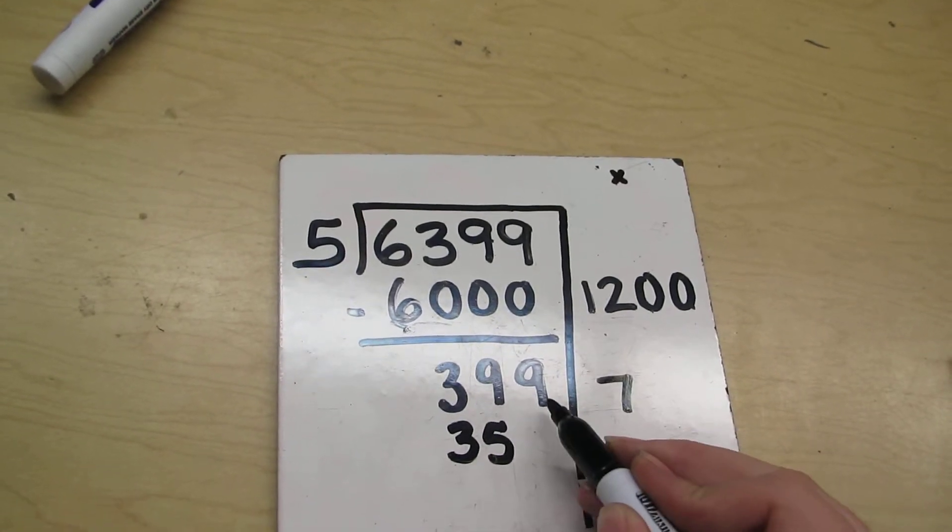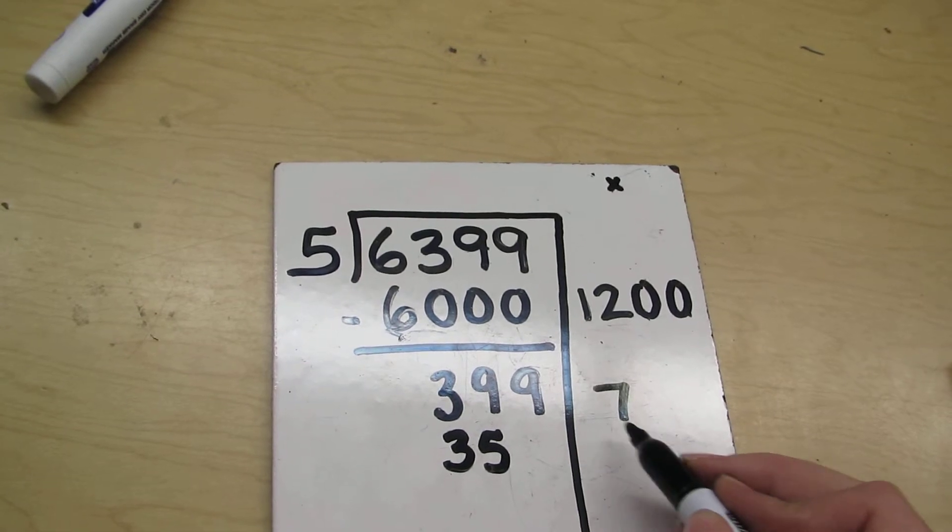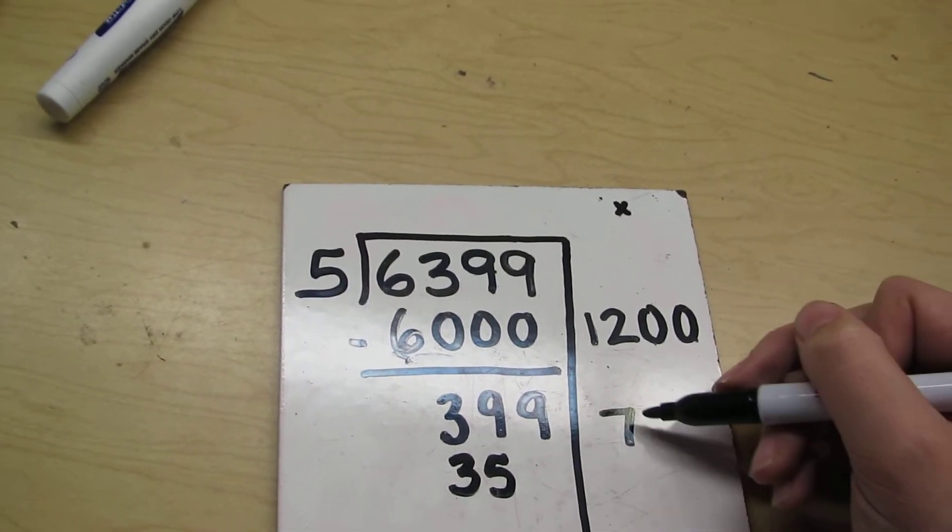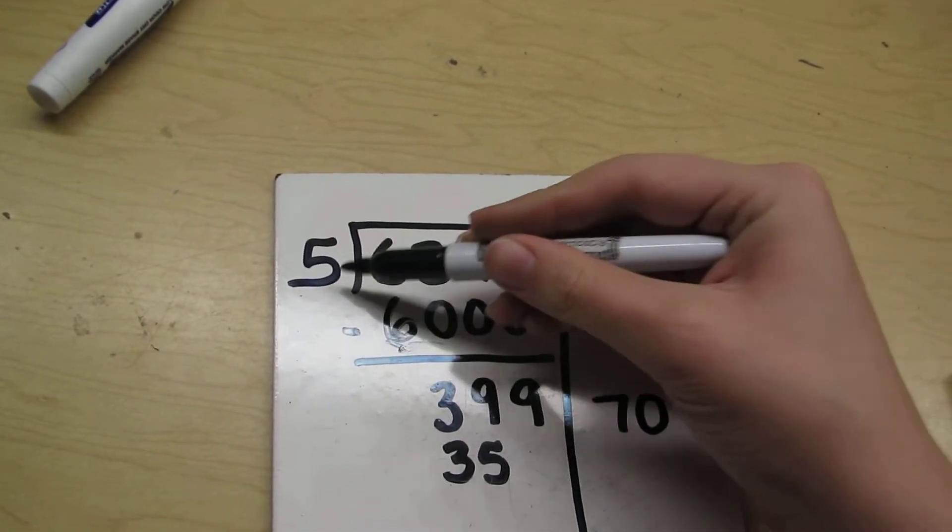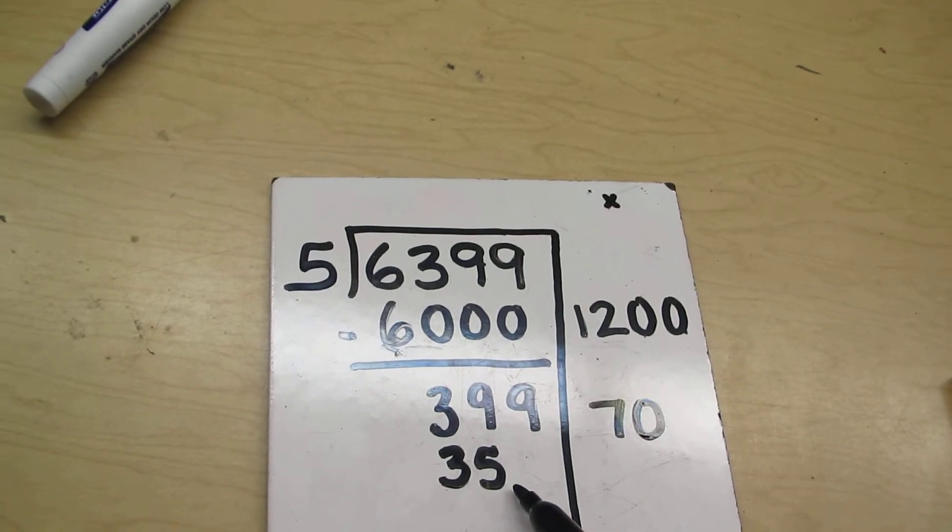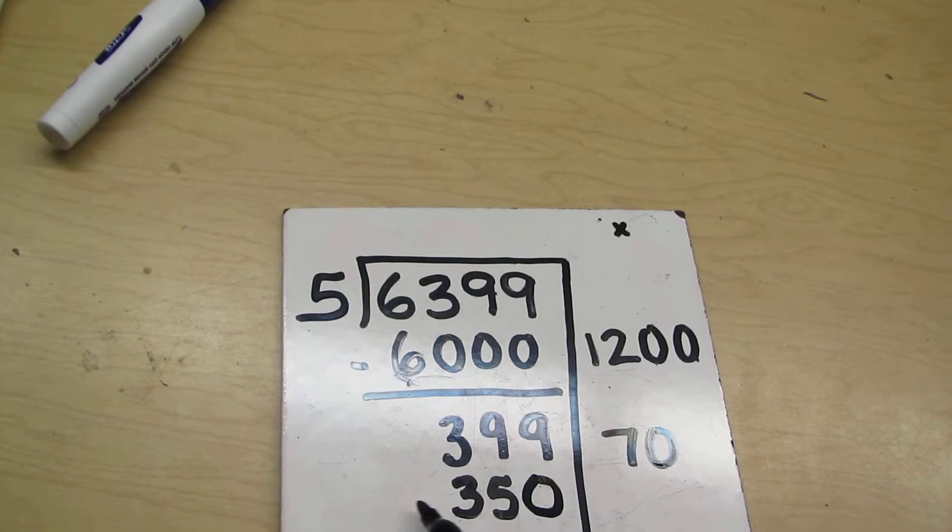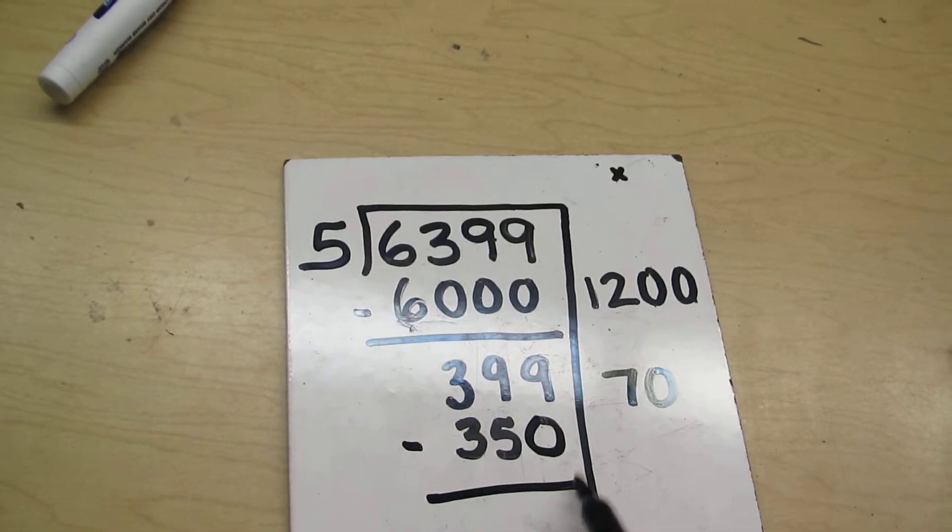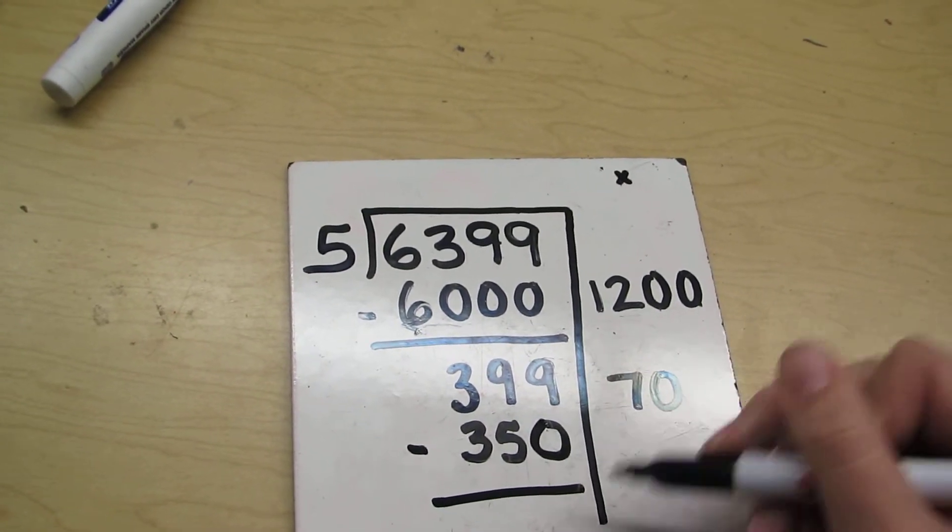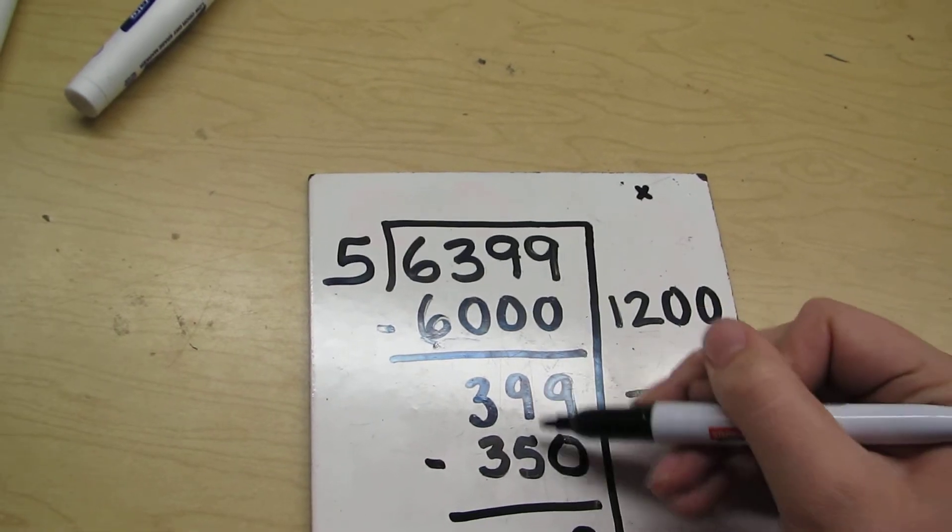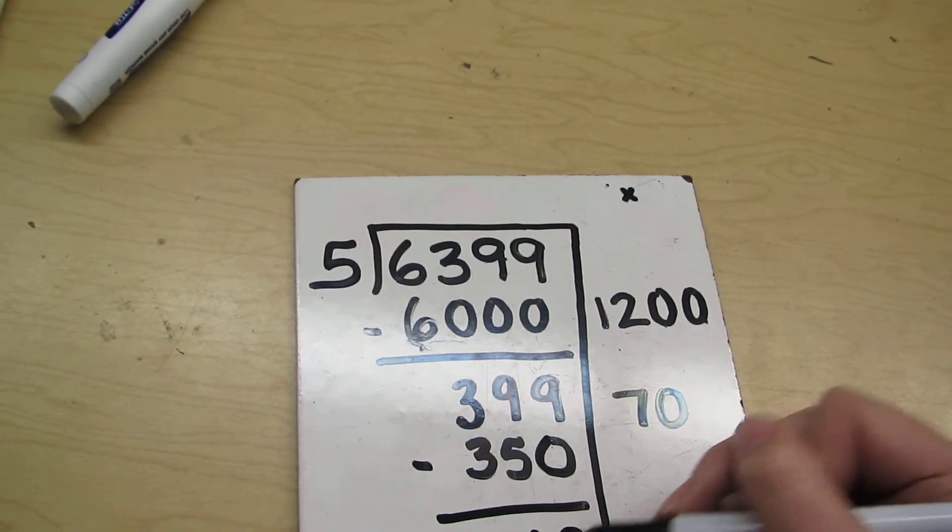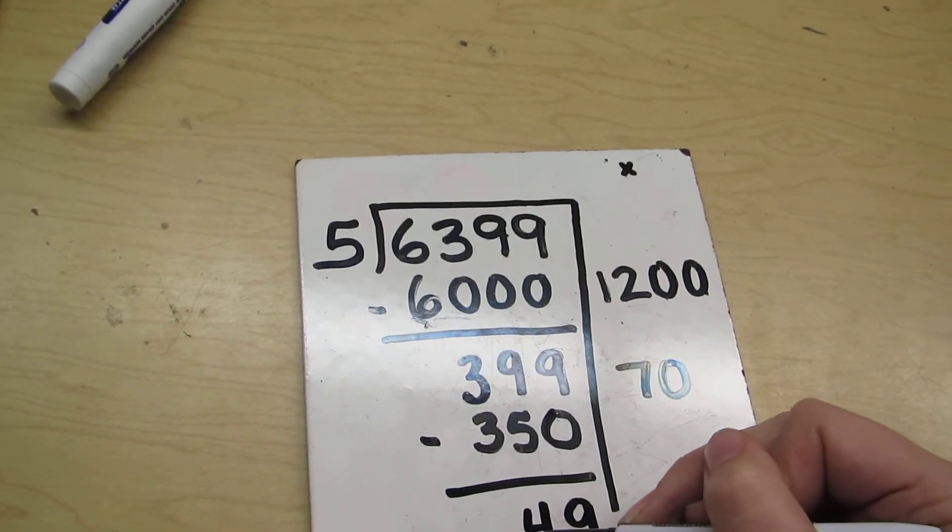Oh, but this is a three-digit number, so I need to do something. Can't just be 5 times 7. I need to add a 0 there. 5 times 7 is 35. Add a 0. 350. I'm going to do my subtraction. 9 minus 0 is 9. 9 minus 5 is 4. And 3 minus 3 is 0.